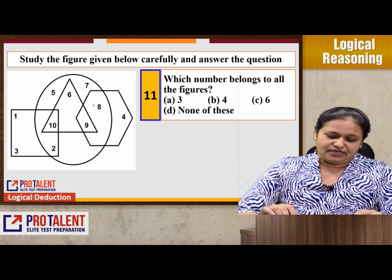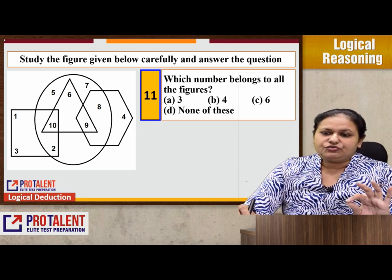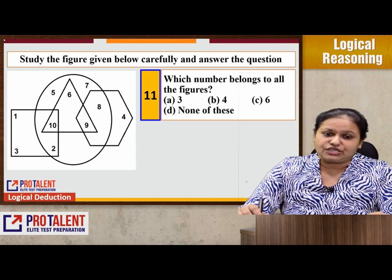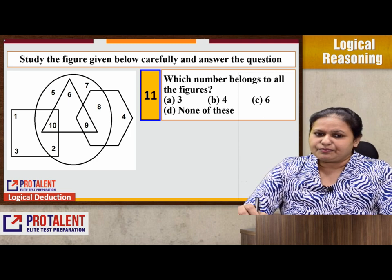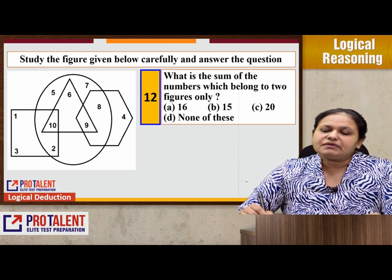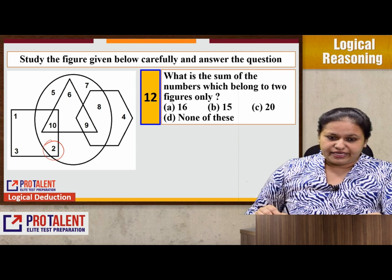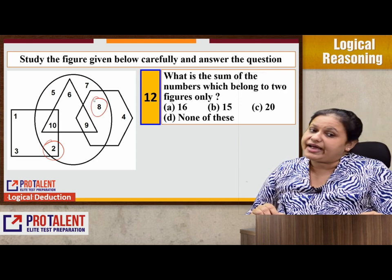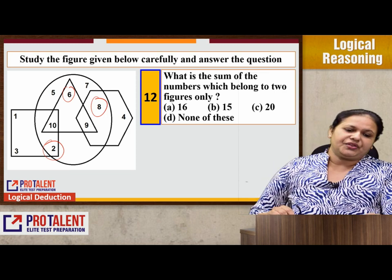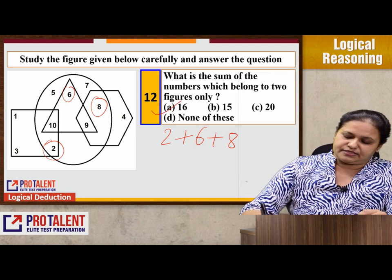This is another variety where we observe shapes and find answers. You have to study the figure carefully. The question asks: which number belongs to all the figures — square, circle, triangle, and hexagon? Looking at the diagram, no number is present in all four shapes, so the answer is none of these. Next: what is the sum of numbers which belong to exactly two figures? Those numbers are 2 (square and circle), 6 (hexagon and circle), and 8 (triangle and circle). So the answer is 2 + 6 + 8 = 16.